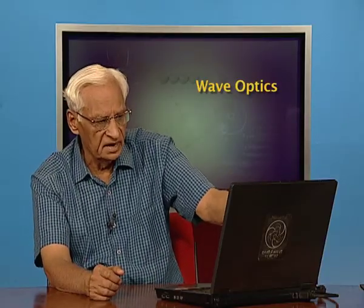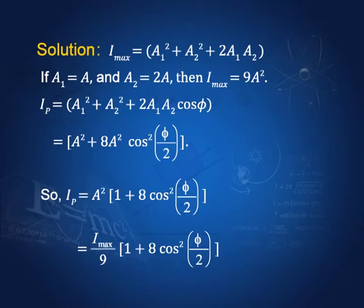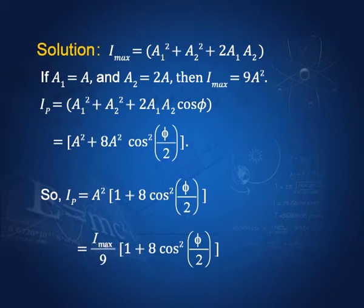Example: in a Young's double slit experiment, one slit is wider so the amplitude from one slit is double that from the other — say A1 = a and A2 = 2a. Substituting into the intensity formula, Imax = 9a². At any point, Ip = a²(1 + 8cos²(φ/2)), and since a² = Imax/9, we get Ip = (Imax/9)(1 + 8cos²(φ/2)).